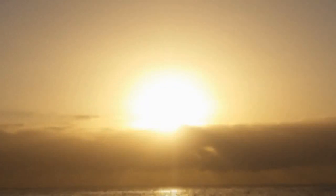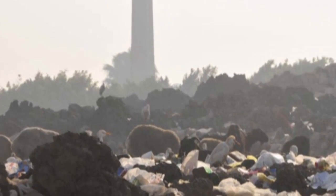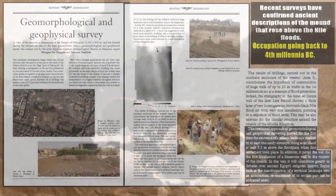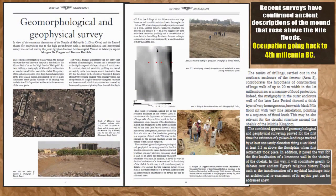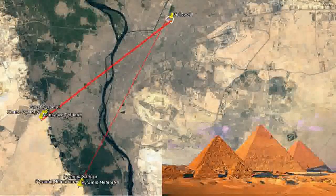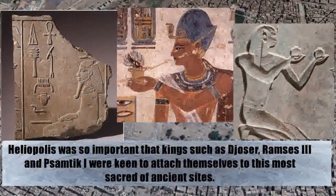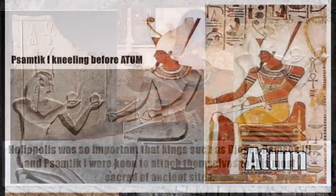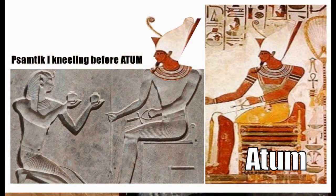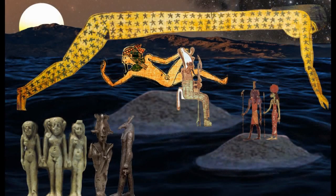The center of Ra-Atum worship since the old kingdom, Heliopolis marks the spot where Atum lifted the Benben mound out of the primordial waters. Recent survey and excavation work has shown that it indeed was once a mound that rose above the Nile flood and has been occupied since before the old kingdom. Heliopolis was so important that entire pyramid fields — including the famous pyramids of the Giza plateau — are all aligned to it, and it should be no surprise that kings from Djoser to Ramesses III and Psamtik I were so eager to associate themselves with this temple and city complex.